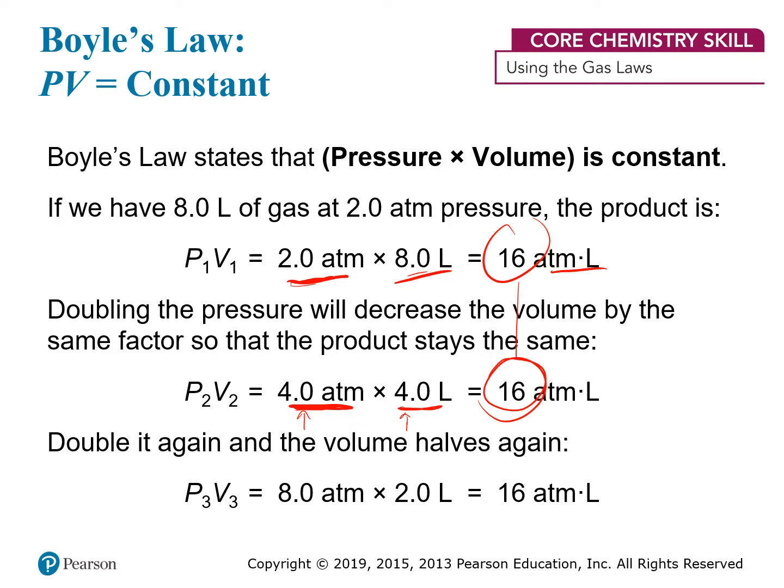You can double the pressure again, going from 4 atmospheres to 8 atmospheres, and to keep the product constant at 16 atmosphere-liters, the volume goes down from 4 liters to 2 liters. So no matter what change you make to the pressure of this system, the volume will make a corresponding change — or you could change the volume and the pressure will change to accommodate that. Pressure and volume are not fully independent; they're interrelated with one another.